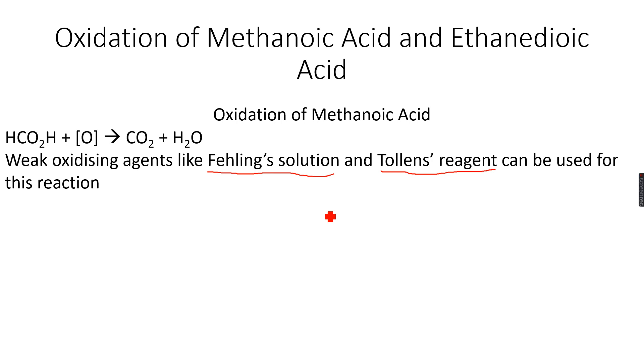For now what we need to know is that they are weak oxidizing agents. I'll be talking more about them when I do a video on carbonyl compounds for the AS level curriculum, but for now what you need to know is that these are weak oxidizing agents. So to oxidize methanoic acid we need weak oxidizing agents like these two, Fehling's solution and Tollens reagent.